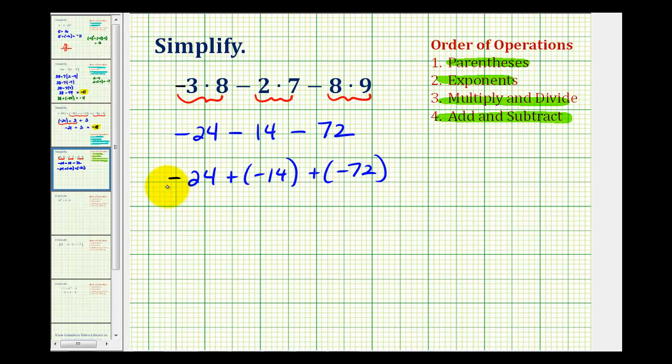So now working our way from left to right, we have negative 24 plus negative 14. Notice how we're adding integers with the same sign, so we'll add their absolute values and keep the sign. Well, 24 plus 14 is 38, so the sum is negative 38.